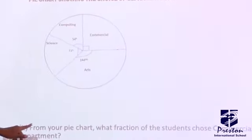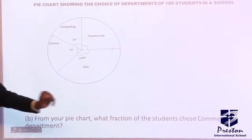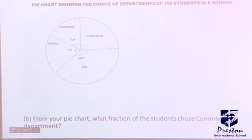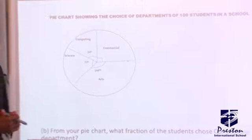Now, let's look at the B. It says, from your pie chart, what fraction of the students choose commercial departments? I can do this in two ways.